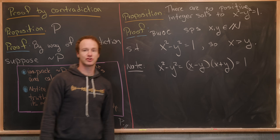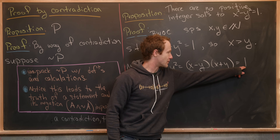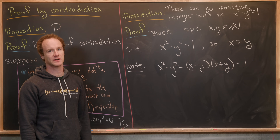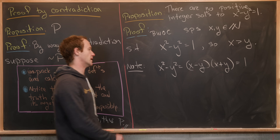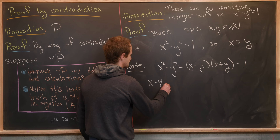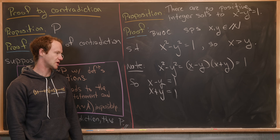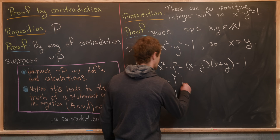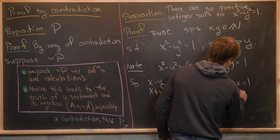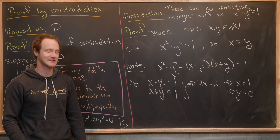Since we're working over the natural numbers and x is bigger than y, we've factored the number one as the product of two natural numbers. But the only way to factor one as a product of two natural numbers is one times one. So x minus y equals one and x plus y equals one. Adding the two equations gives two x equals two, which means x equals one, which means y equals zero.